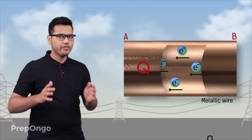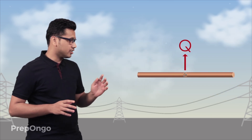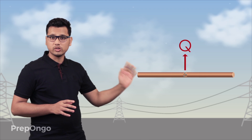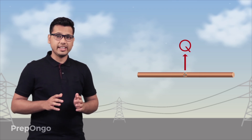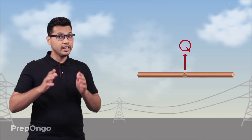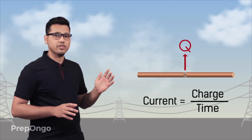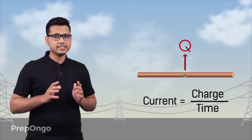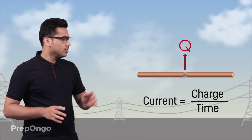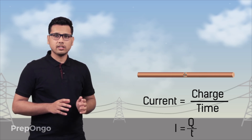If I zoom out this conductor and say that Q charge is flowing through this conductor in time t, then the electric current flowing through this conductor will be equal to Q by t. So we can say that I is equal to Q by t.